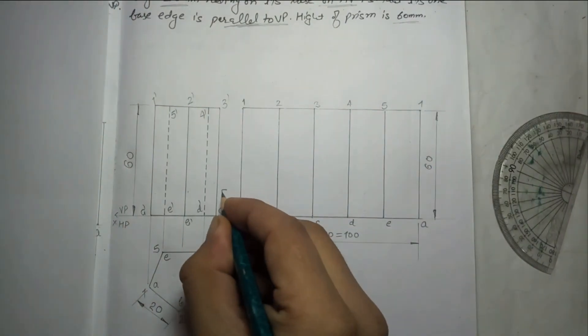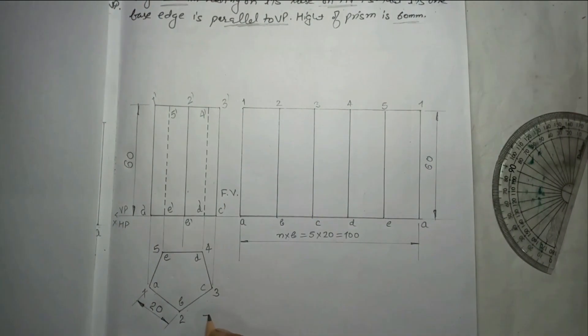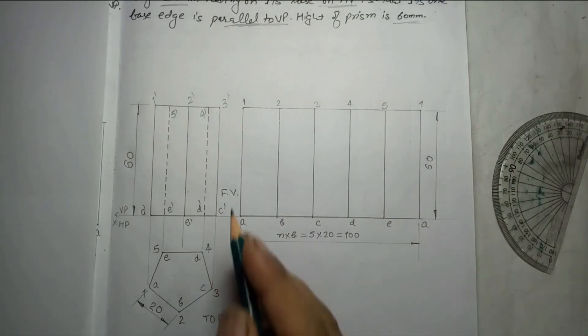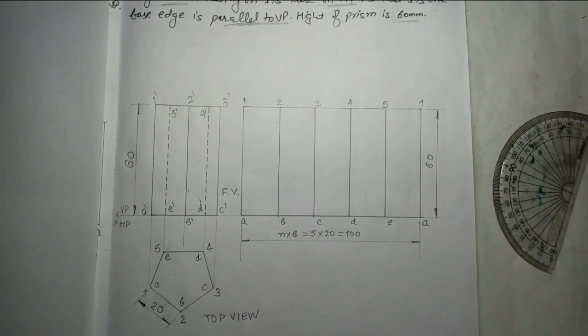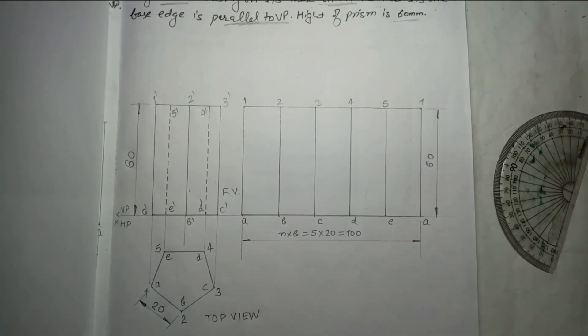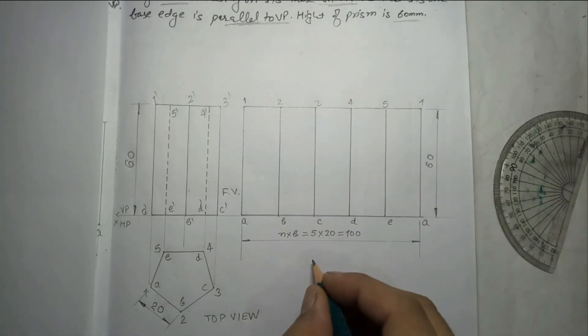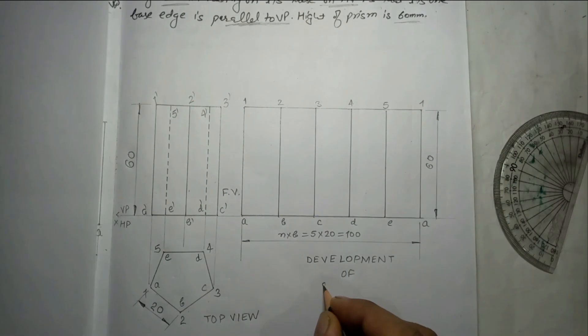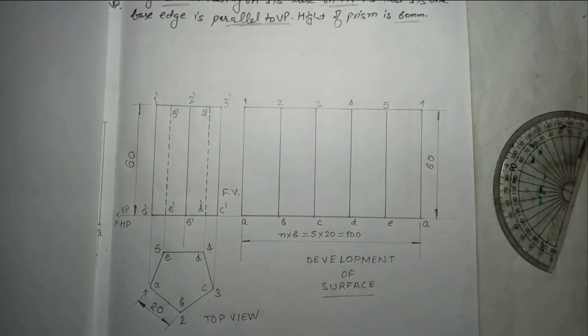And here the name of this view is front view, and this is top view. Space was less, that is why I have written front view in short form. So this is the development of surface, and this surface is representing development of surface. This is the solution.